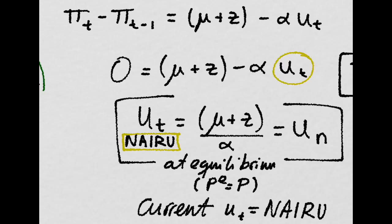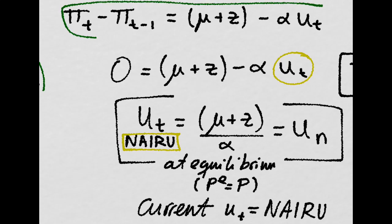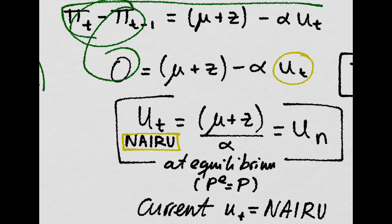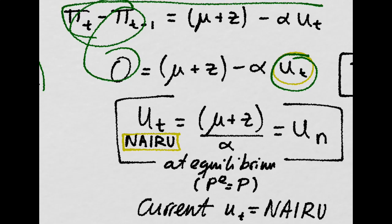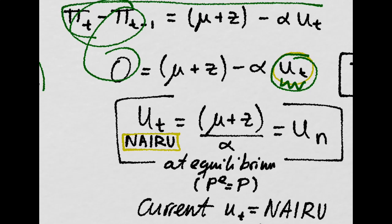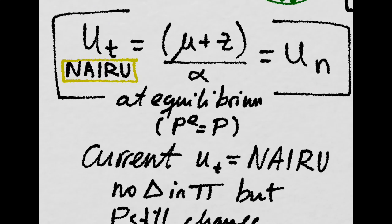The expectations-augmented Phillips Curve would be equal to zero. And then solving for the unemployment level, the unemployment rate, which is in this case the NAIRU, we get this expression.